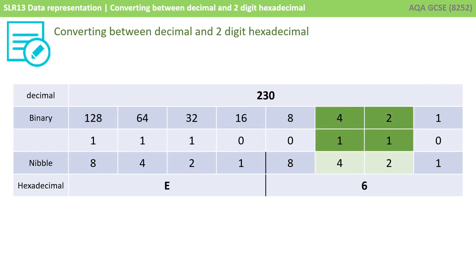I take the right-hand nibble and I've got a one in the four column and a one in the two column, giving a value of six. So the decimal number 230 in hex is E6.